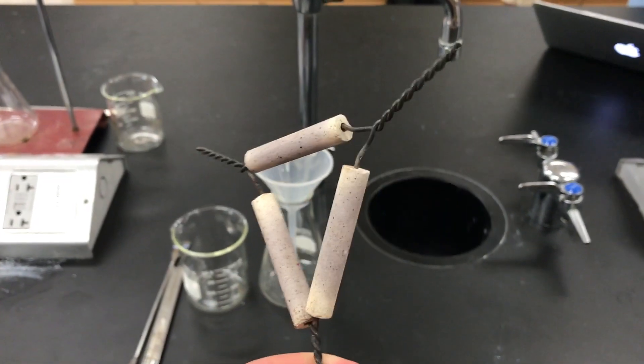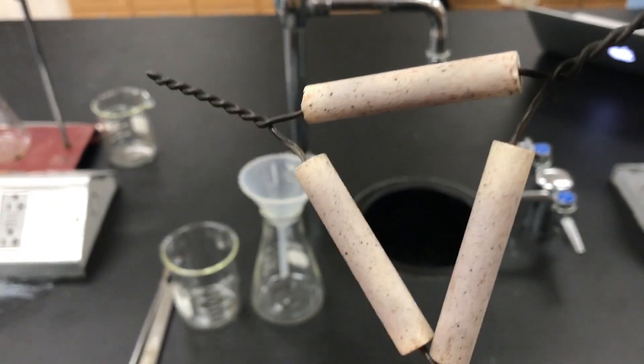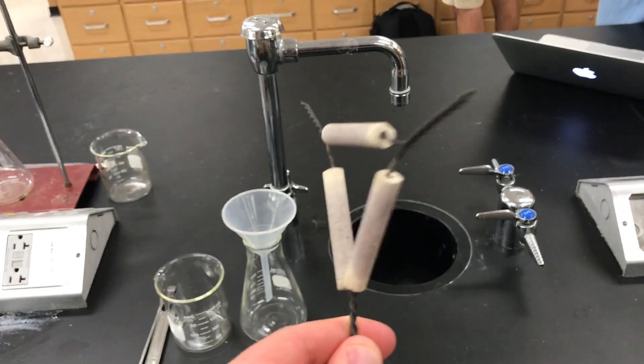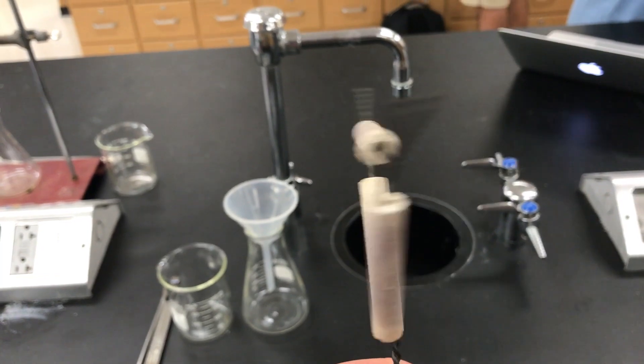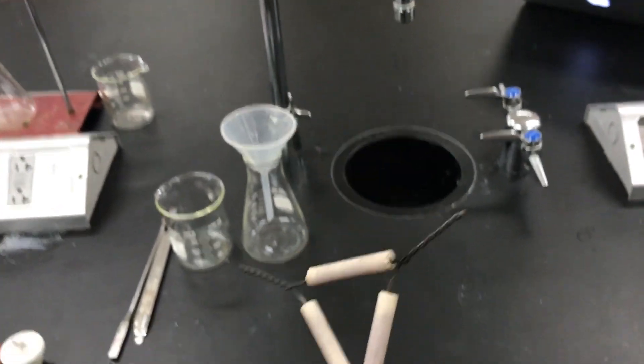This is a clay triangle. It's a piece of laboratory equipment. It's used to support a crucible. It can be heated over a Bunsen burner. It is made of wires and clay.